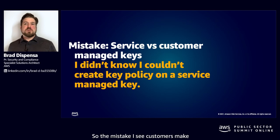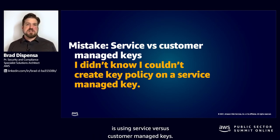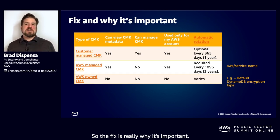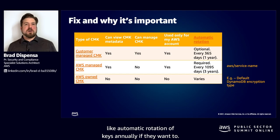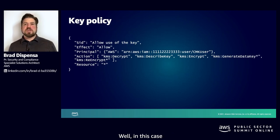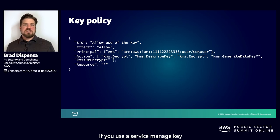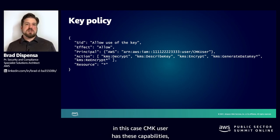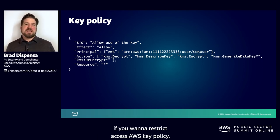Next is AWS KMS. The mistake I see customers make is using service versus customer managed keys. They didn't know they couldn't create a key policy on a service managed key. Customer managed keys allow customers to make changes to the key policy and enable automatic rotation of keys annually. For AWS managed keys, AWS handles rotation but doesn't allow the customer to manage the CMK policy. In plain English: if you want to restrict access to a KMS key policy, you have to use a CMK — a customer managed key — and not a service managed key. The key policy allows actions like decrypt, describe, encrypt, and generate data key, and you can specify a specific principal with those capabilities. With a service managed key, it's available to all users in the account.